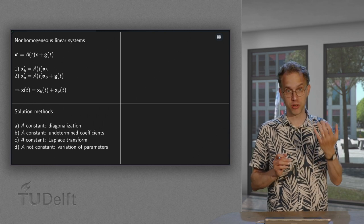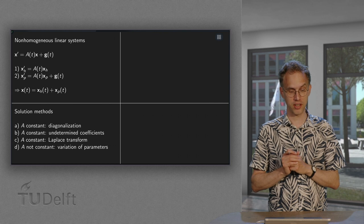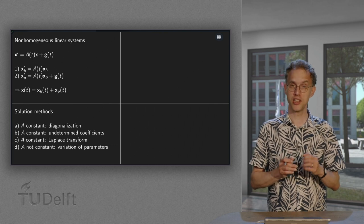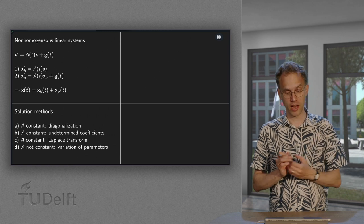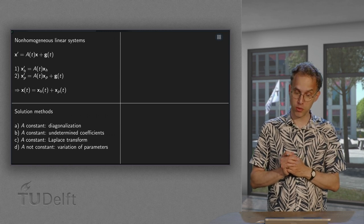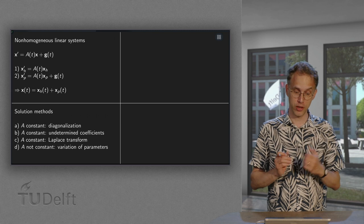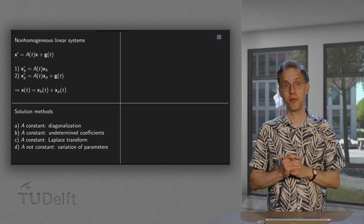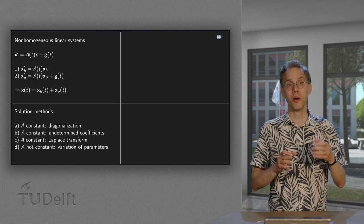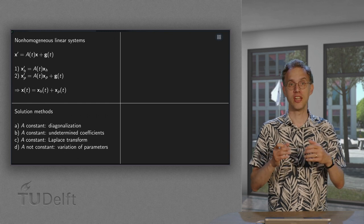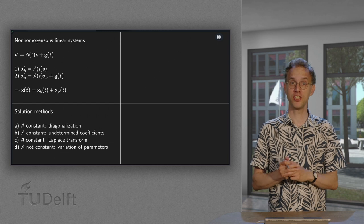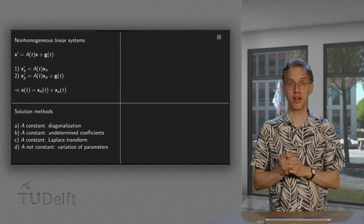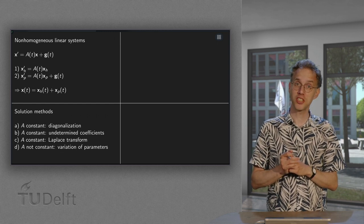Well if A is constant we can use three methods. We can use diagonalization. We will look into that a bit further. You can have the method of undetermined coefficients. You can use a Laplace transform if A is constant. That works well in the sense that you transform your differential equations into algebraic equations. You can solve these algebraic equations. That will now be a matrix equation.